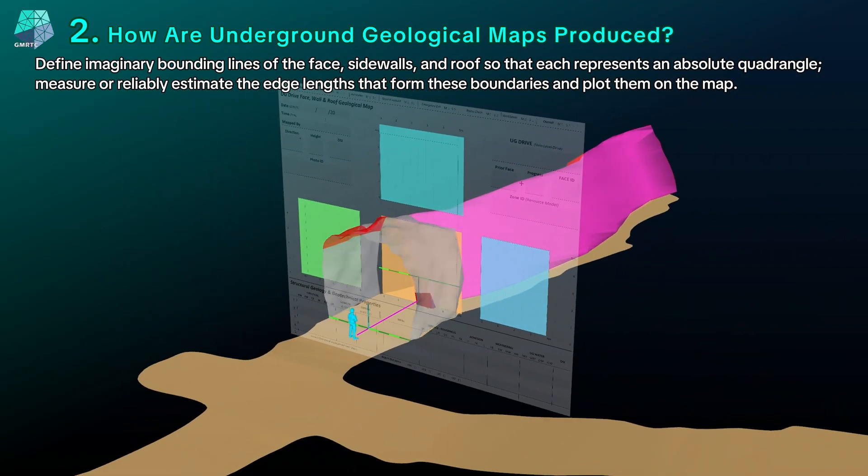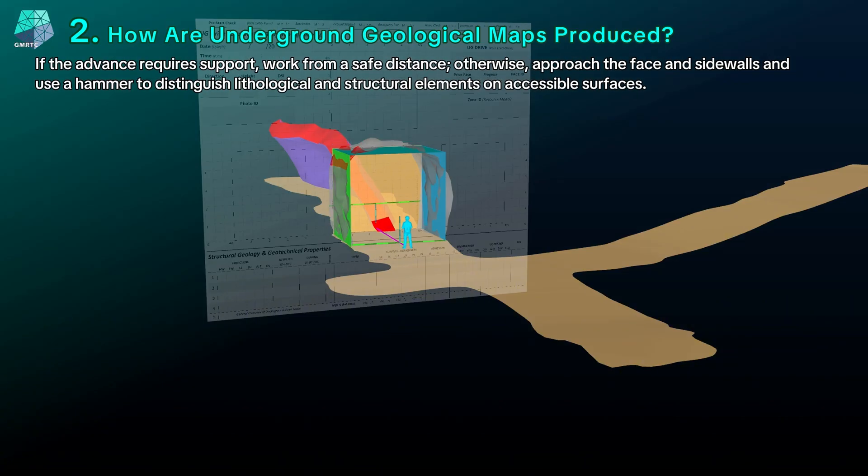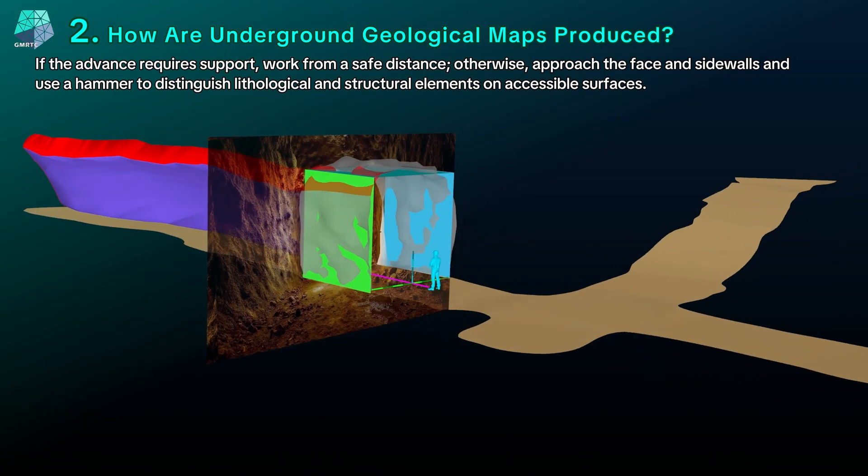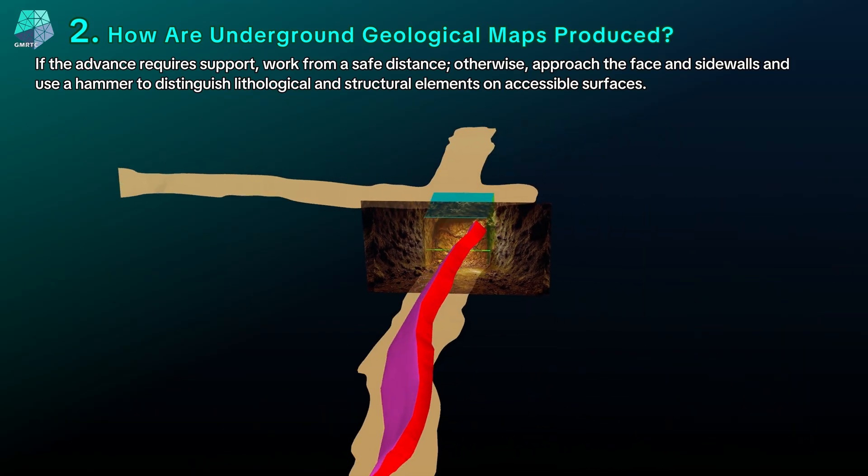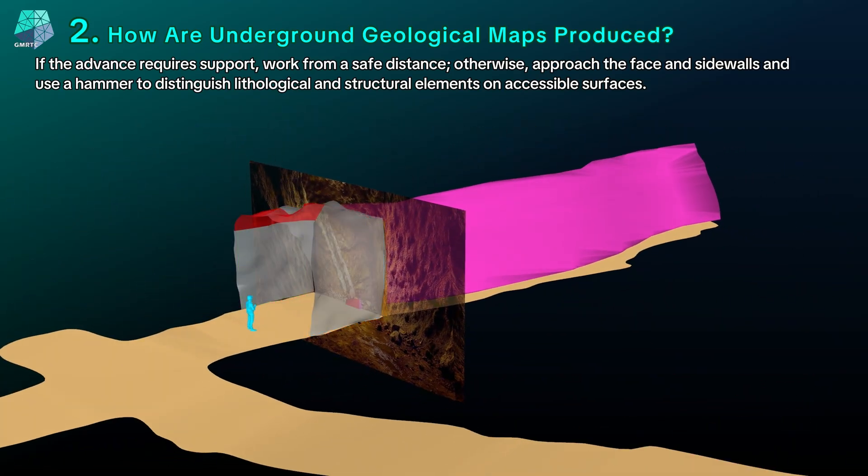Define imaginary bounding lines of the face, sidewalls, and roof so that each represents an absolute quadrangle. Measure or reliably estimate the edge lengths forming these boundaries and plot them on the map. If the advance requires support, maintain a safe distance. If not, approach the face and sidewalls and use a hammer to distinguish lithological and structural elements on accessible surfaces.